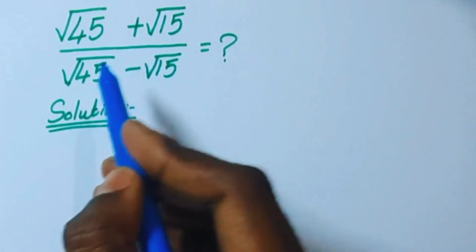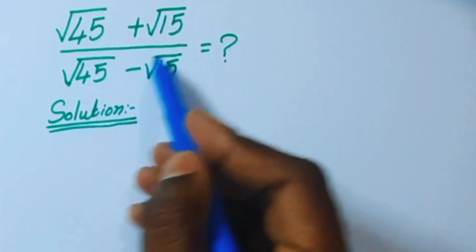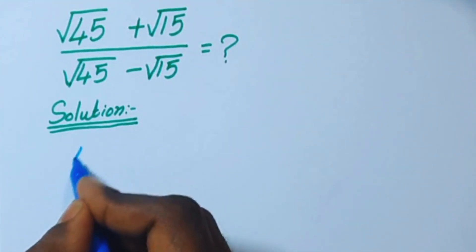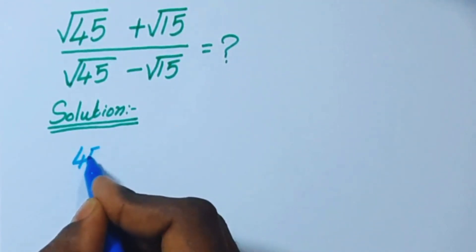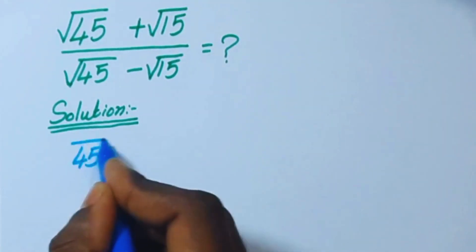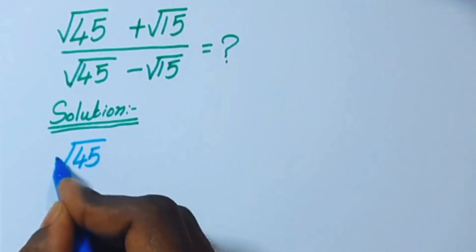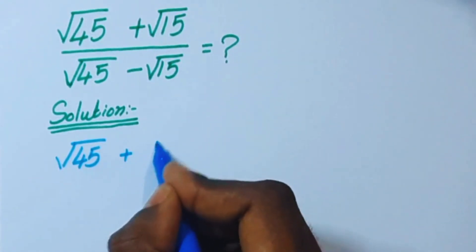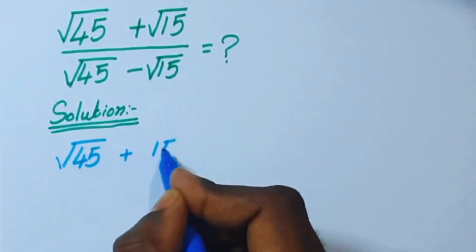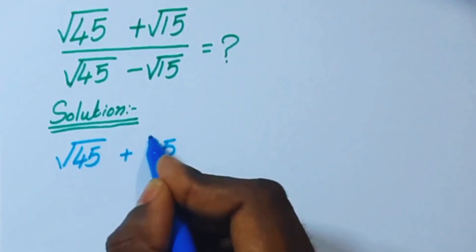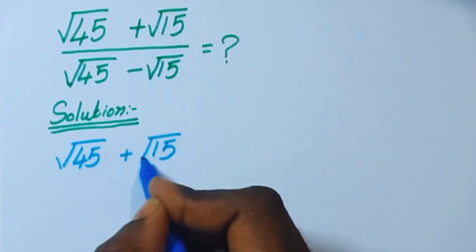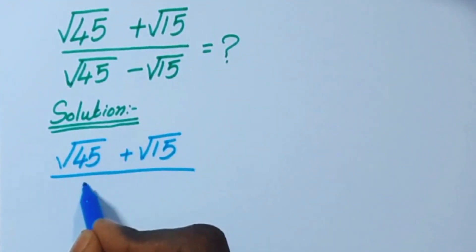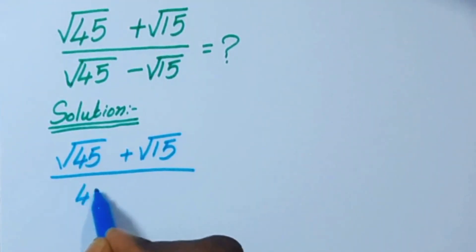Hello, you are welcome. Today we are going to solve this problem: the square root of 45 plus square root of 15, divided by square root of 45 plus square root of 15.